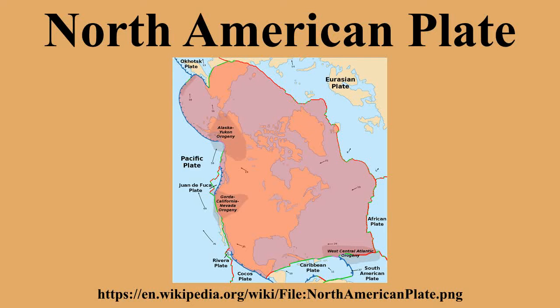This boundary continues from the end of the Gakkel Ridge as the Laptev Sea rift, onto a transitional deformation zone in the Chersky Range, then the Ulakhan Fault between it and the Okhotsk Plate, and finally the Aleutian Trench to the end of the Queen Charlotte Fault system. The westerly boundary is the Queen Charlotte Fault running offshore along the coast of Alaska and the Cascadia subduction zone to the north.